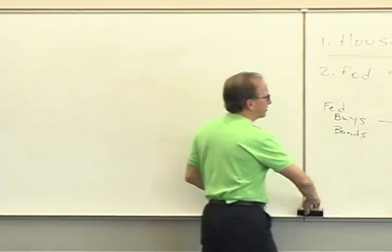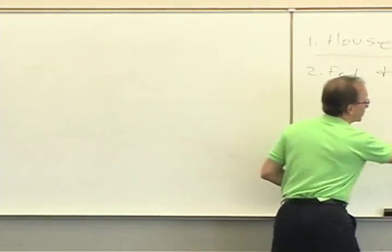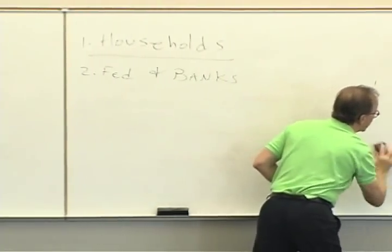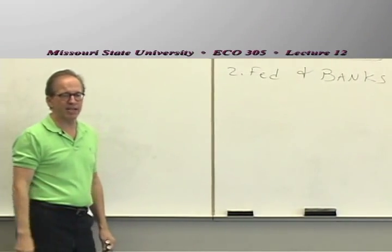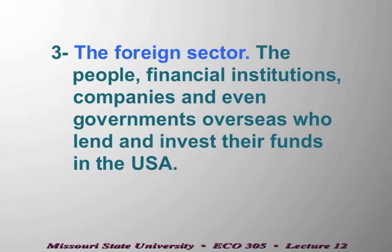Our third sector is the foreign sector. A substantial amount of funds come to the United States from people overseas, from a couple of different places. One is that people overseas have income and they save money — and some of that saving they send to the United States, maybe into a bank account or into some bonds. Another source of foreign saving is sometimes governments overseas.